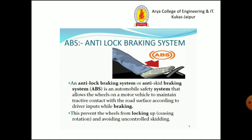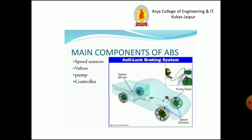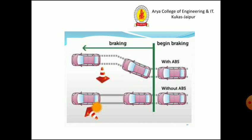Next is ABS — Anti-lock Braking System or anti-skid braking system. ABS is an automobile safety system that allows the wheels on a motor vehicle to maintain tractive contact with the road surface according to driver inputs while braking, preventing the wheels from locking up and avoiding uncontrolled skidding. The main components used in ABS are speed sensors, valves, pump, and controller. Braking with ABS versus without ABS shows more skidding and a higher chance of collisions without ABS.